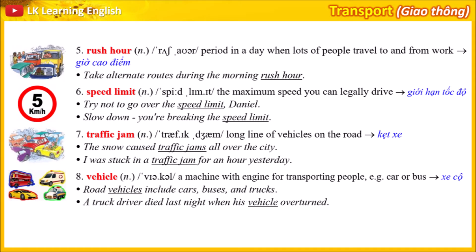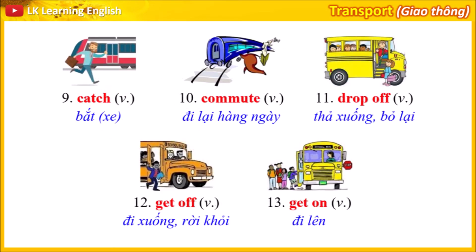8. Vehicle: a machine with an engine for transporting people, for example a car or bus. Example 1: Road vehicles include cars, buses and trucks. Example 2: A truck driver died last night when his vehicle overturned.